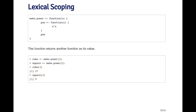I can call make.power and pass it a number like three, and it will return a function which I'll assign to be called cube. Similarly, I can pass two to make.power and create a function that I'll call square. When I pass cube the number three, it raises three to the third power, giving me 27. If I call square on the number three, it raises three to the second power, giving me nine.